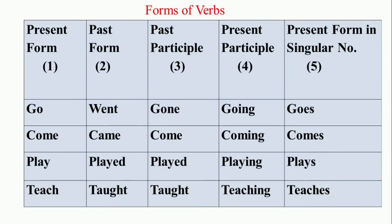To understand the tense in an easy way, you have to understand the forms of the verbs. Let us understand with the help of the table chart given on the slide. 'Go' is the first form of the verb. Second: went. Third: gone. Fourth: going. Fifth: goes.